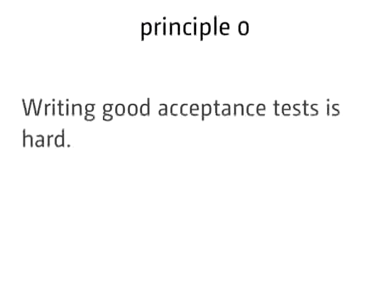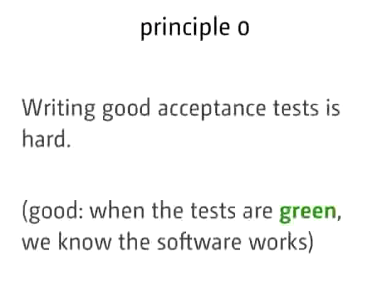Writing good acceptance tests is hard. What do we mean by good? If the tests are green, we should know that the software works — that's what a good test is. The pyramid and this principle are saying the same thing. What's important is: can you be absolutely certain that when your tests go green, you can release the application to the public and be confident it works as expected? That level of confidence is the first thing you need from your acceptance test suite. As long as this is true, you've done the right thing.